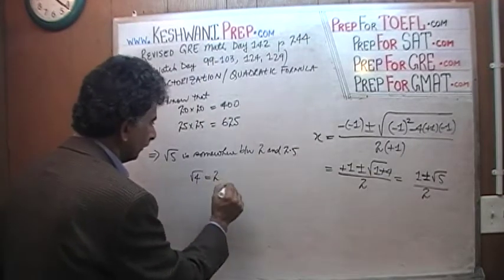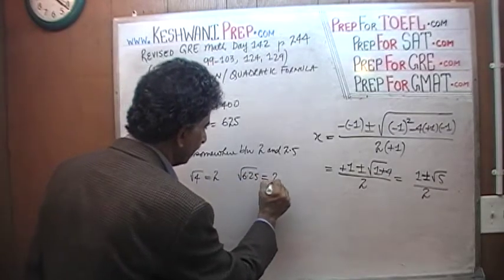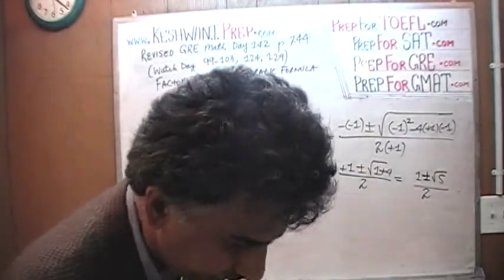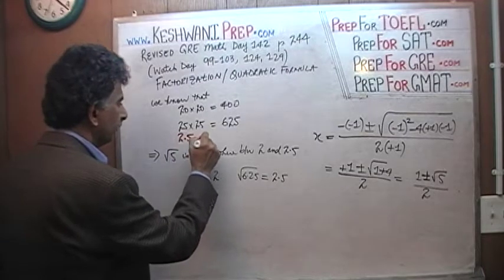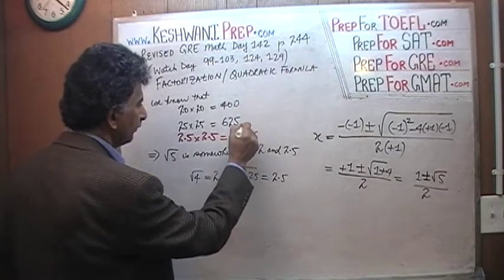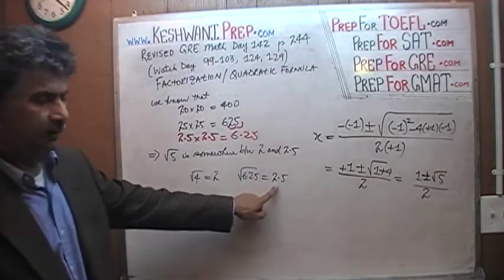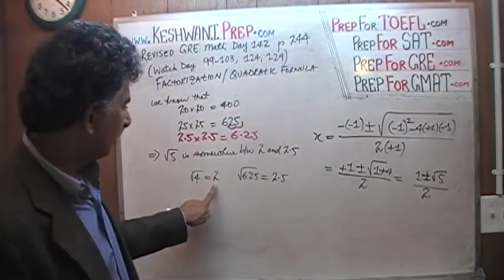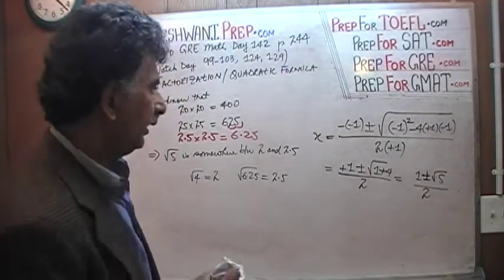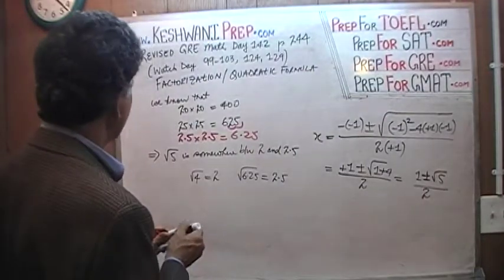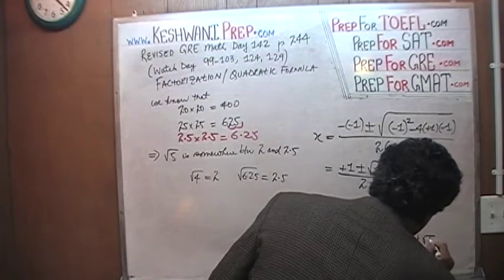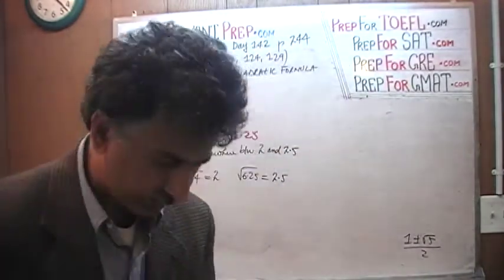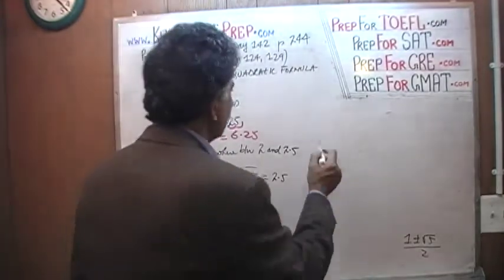I want to locate it more precisely. Let's save the expression 1 plus or minus root 5 over 2 and find a better approximation. Let's find out what 21 times 21 is: 21 times 21 is 441. That's too small — we need something close to 500 to get the square root close to 2.2 range.